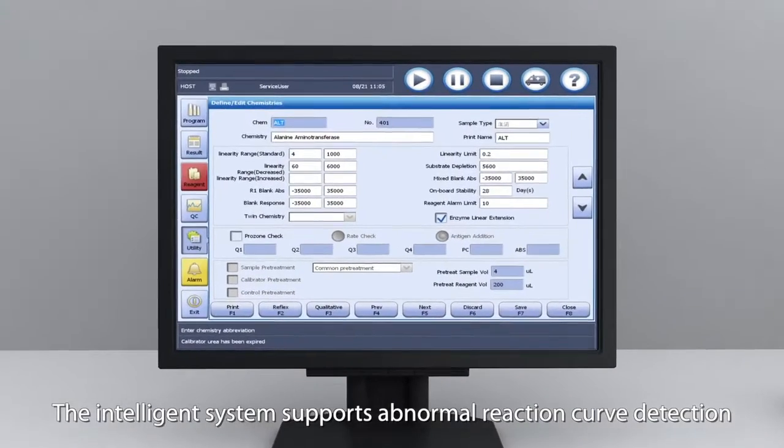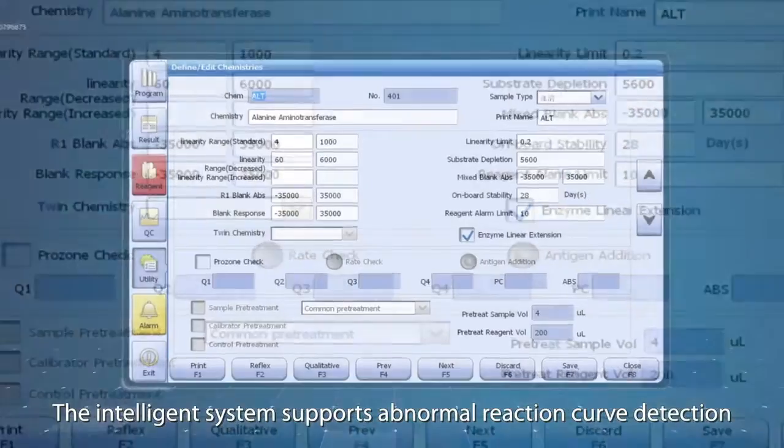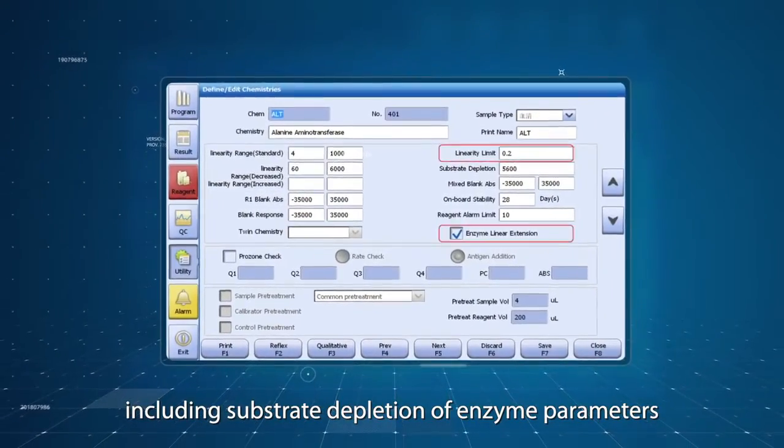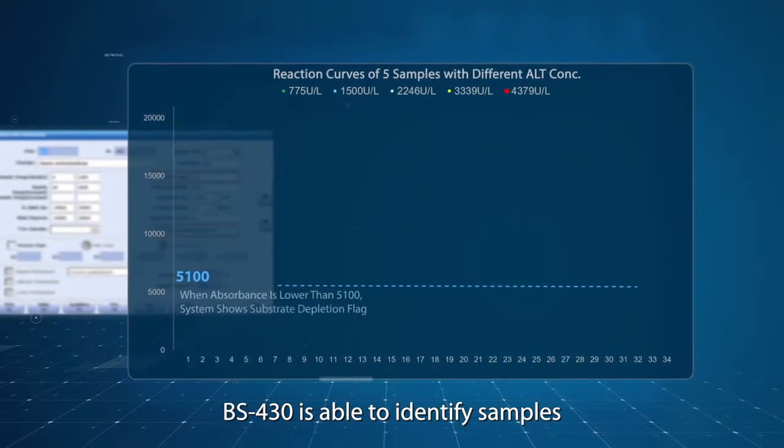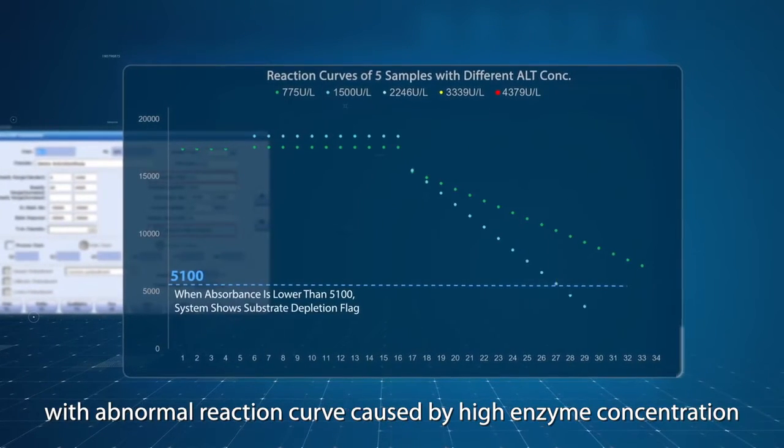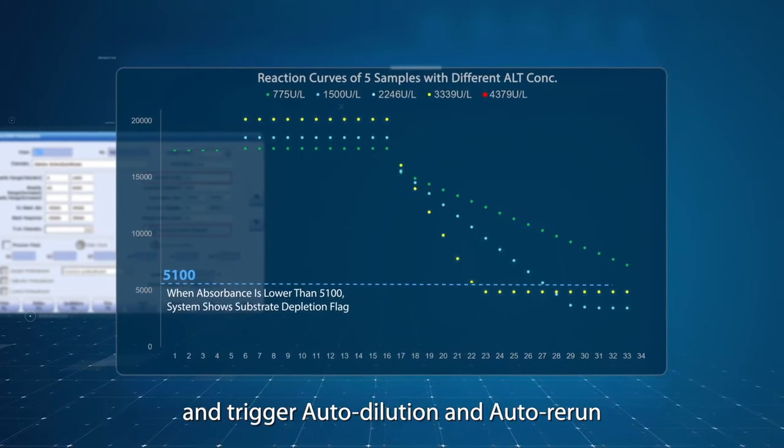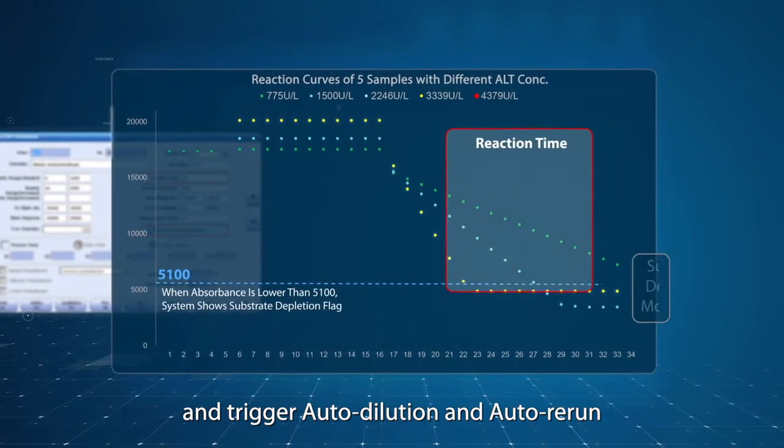The intelligent system supports abnormal reaction curve detection, including substrate depletion of enzyme parameters. BS430 is able to identify samples with abnormal reaction curves caused by high enzyme concentration and trigger auto-dilution and auto-rerun.